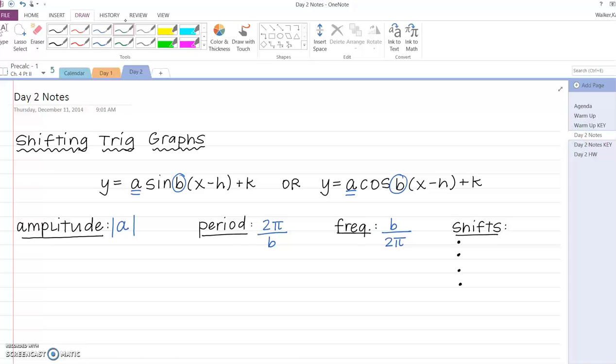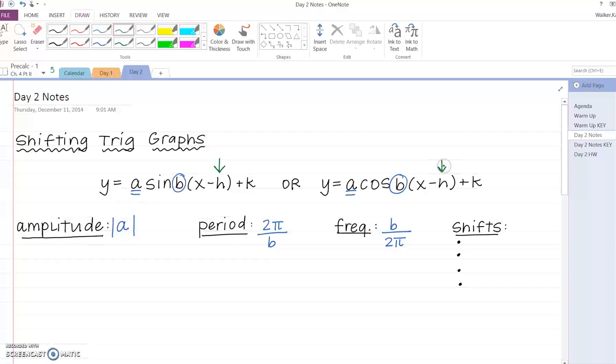Shifts: if I have something happening inside, so for example, if I add or subtract inside, inside things happening inside the functions are always going the opposite. So if I subtract an H, that means I'm going to the right, the opposite of what you'd expect. If I have a plus H inside, that means I'm going to the left. Whereas outside stuff, so these plus Ks, outside is exactly what you expect.